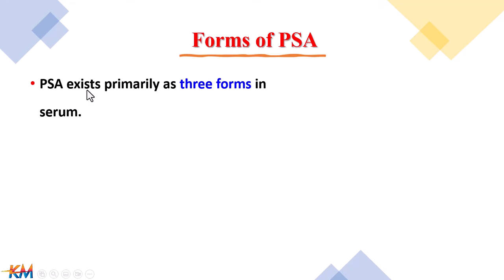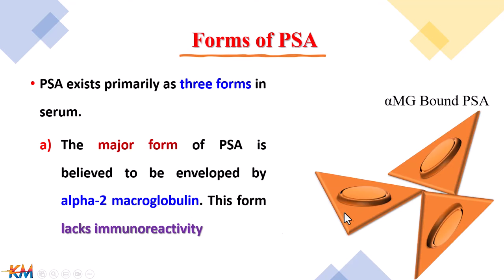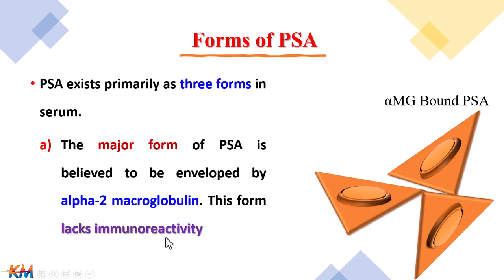There are three forms of PSA in serum. The first major form is PSA bound with alpha-2 macroglobulin, abbreviated as alpha-MG bound PSA. This form lacks immunoreactivity because alpha-2 macroglobulin makes a covering of all antigenic sites on PSA. Therefore, this form cannot react with antibodies in ELISA tests.